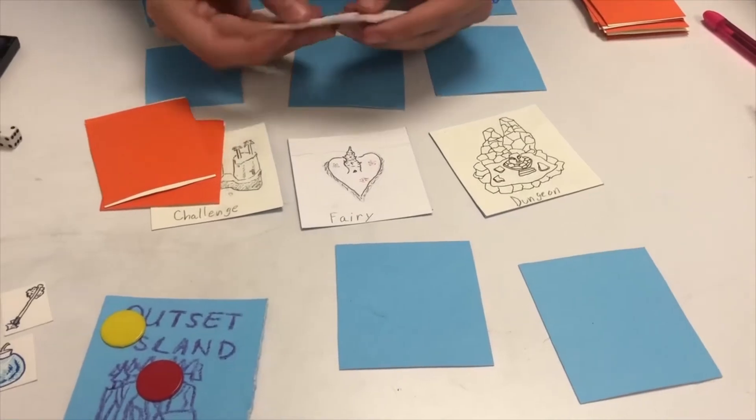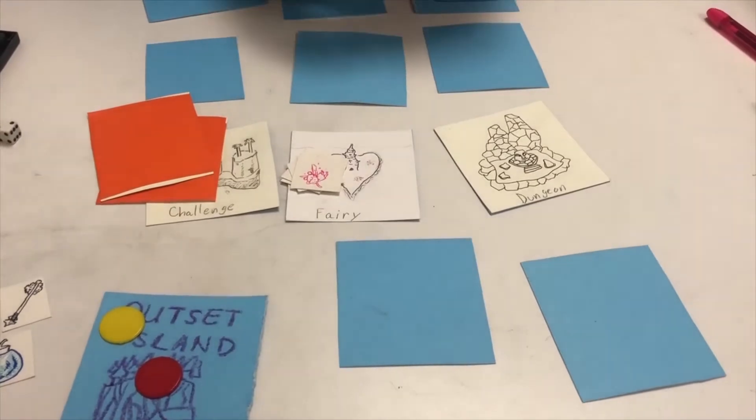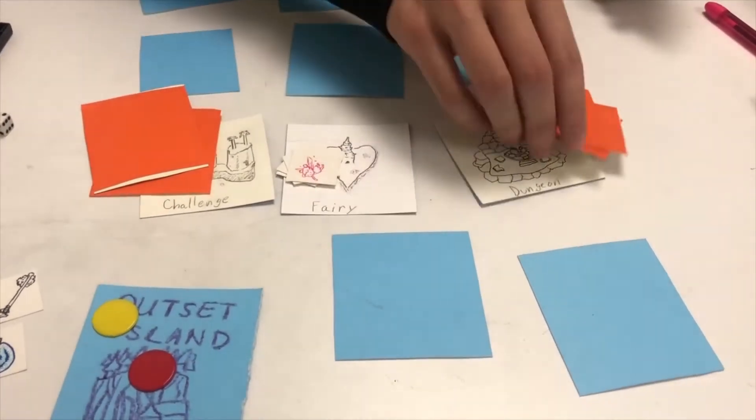When a fairy island is revealed, take five fairy tokens and put them on the fairy island. When a dungeon island is revealed, take three monster cards and put them face down on the dungeon island.